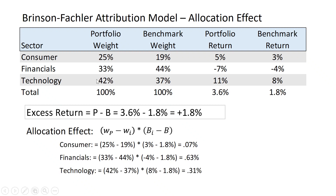For technology, we were overweight by 5%. Technology stocks were up 8% — a great month for tech. The total benchmark return was up 1.8%, so it was a good decision to overweight technology, and you can see that bears out: 31 basis points. If I sum all this up, our allocation effect added 101 basis points to portfolio excess return during the month. We had 1.8% overall, so we haven't figured out where the other 70 or so basis points came from, but this is a good start.